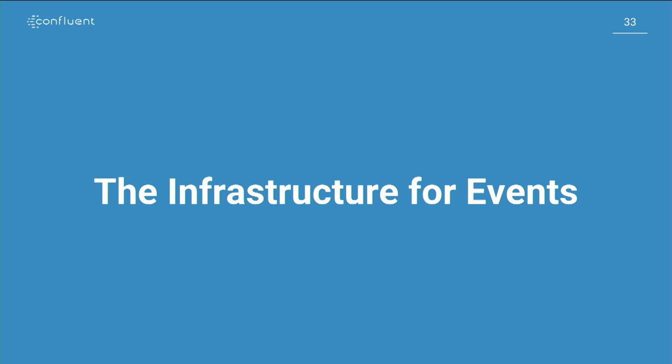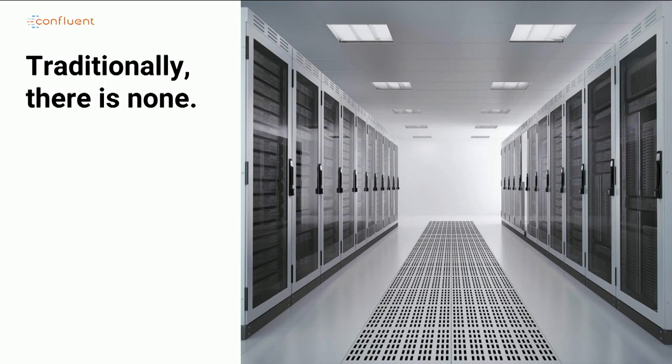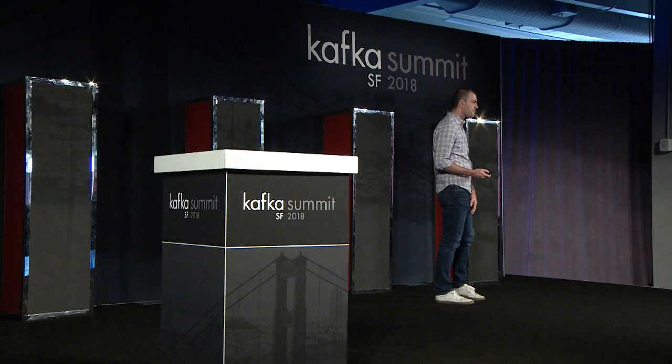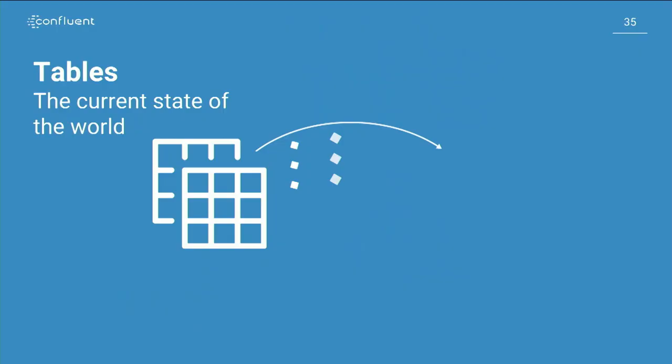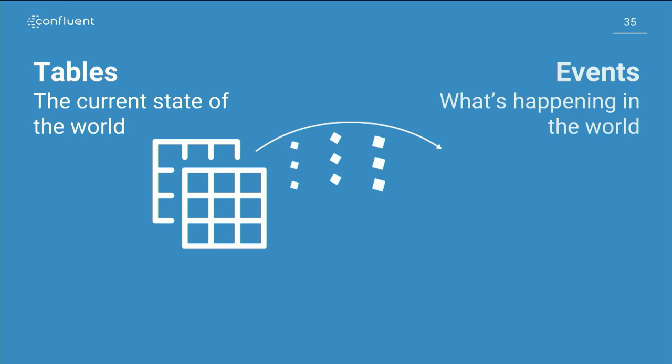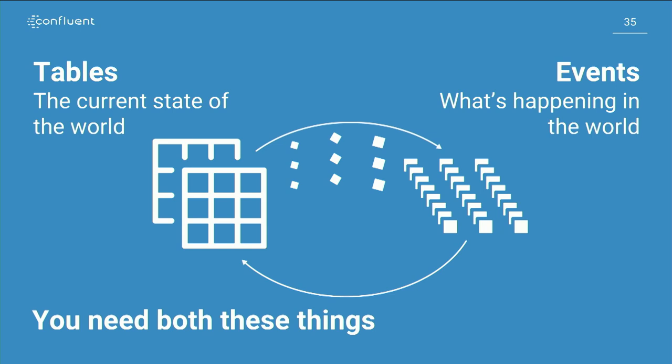That brings us to the infrastructure for events. What's the right way to represent this? Traditionally, we haven't — there's been a bunch of databases with tables. Databases are important; that's not something going away or getting less important. But it's only half the picture. A table can store the current state of the world — how the world is right now. But events are about what's happening in the world. The state of the world impacts what happens in the world, and what happens in the world impacts the state of the world. You need both, and you need to represent both. But we've only done half.